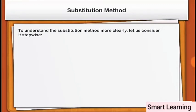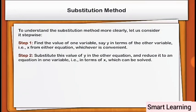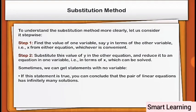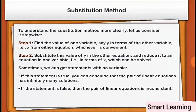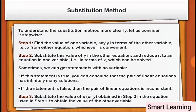To understand the substitution method more clearly, let us consider it stepwise. Step 1: Find the value of one variable, say y, in terms of the other variable x from either equation, whichever is convenient. Step 2: Substitute this value of y in the other equation and reduce it to an equation in one variable x, which can be solved. Sometimes we get statements with no variable — if true, the pair has infinitely many solutions; if false, the pair is inconsistent. Step 3: Substitute the value of x obtained in step 2 into the equation used in step 1 to obtain the value of the other variable.